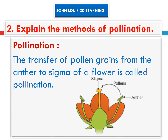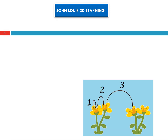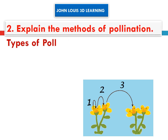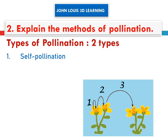The transfer of pollen grains from the anther to the stigma of a flower is called pollination. So, how many types of pollination are there? Two types of pollination are there. What are they? Self-pollination and cross-pollination.